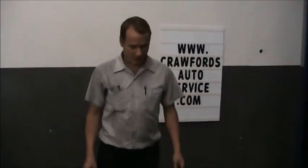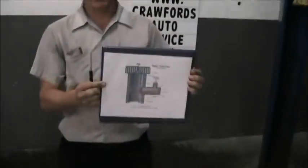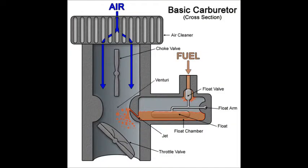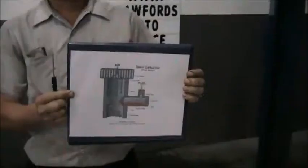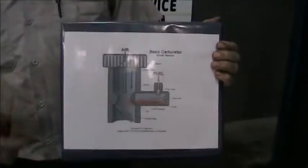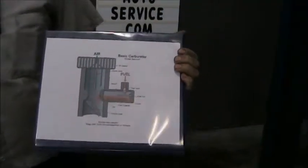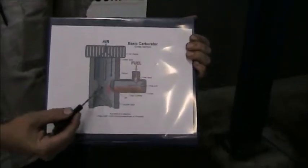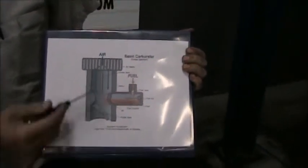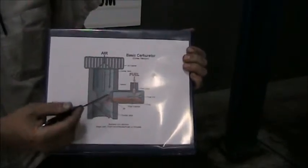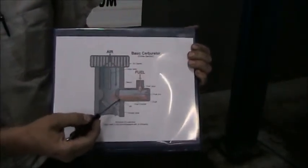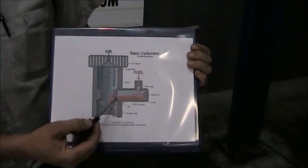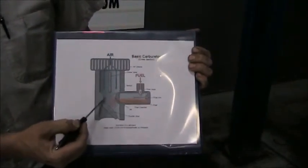We'll start out with the carburetor. This is a primitive diagram of a carburetor — it shows basically how all carburetors function. The primary feature in a carburetor is going to be a venturi, that narrow area right here. When air accelerates through a venturi, it creates a vacuum.